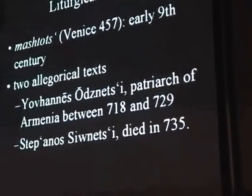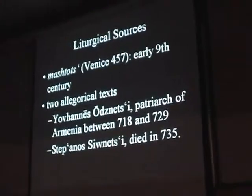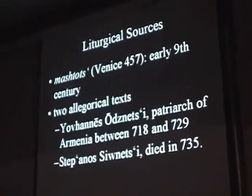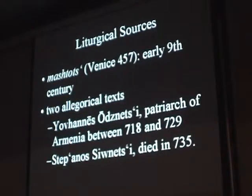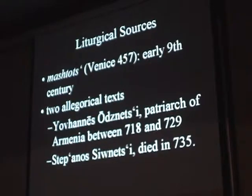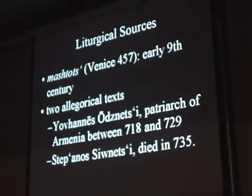There are important liturgical sources which make mention of exterior movement during the rite of consecration. A mashtots from the early 9th century, and two allegorical texts. Scholar and liturgist Father Daniel Fyndikyan wrote a wonderful article on the rite of consecration, noting moments in which the bishop exited the church and pronounced in whose name the church was dedicated. This ceremonial exterior dimension in Armenia makes the sculptural program at Akhtamar very interesting.